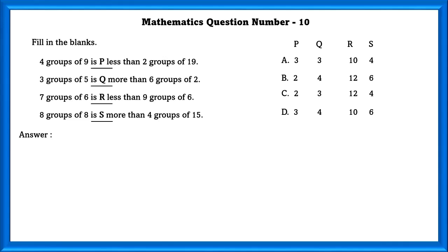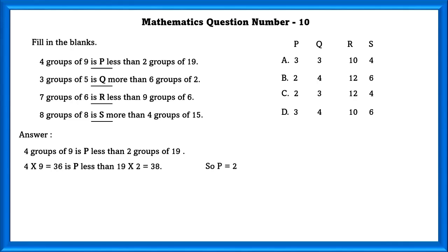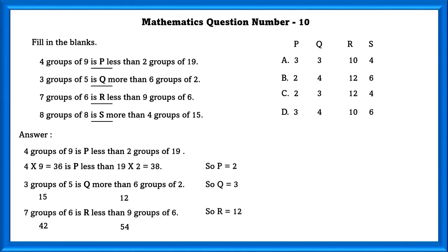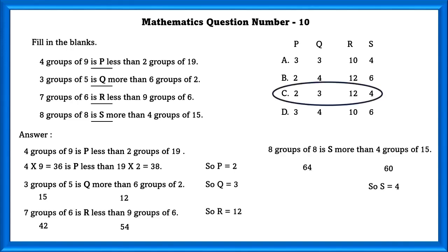Mathematics question number 10. Fill in the blanks. 4 groups of 9 is P less than 2 groups of 19. That is, 4 times 9 equals 36, which is P less than 19 times 2, which equals 38. So 38 minus 36 equals 2, that is P. Similarly, Q equals 3, R equals 12, and S equals 4. This suits option C.